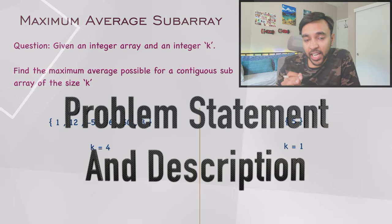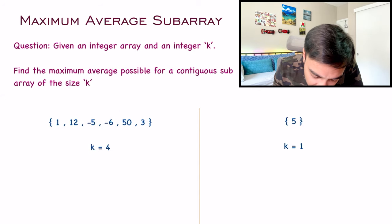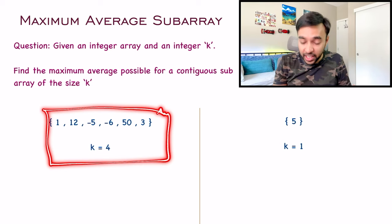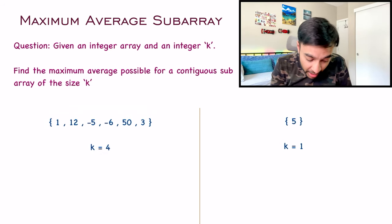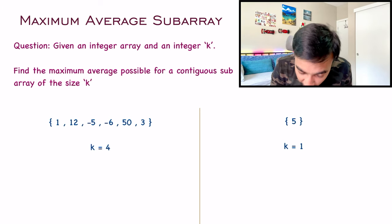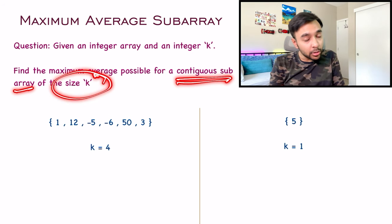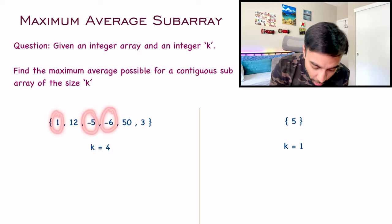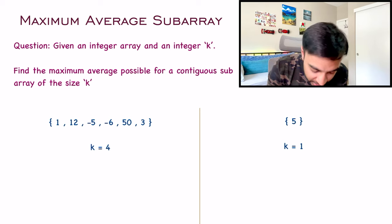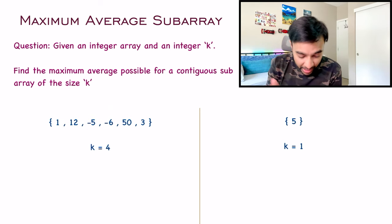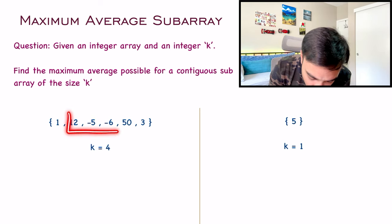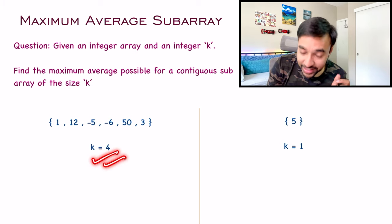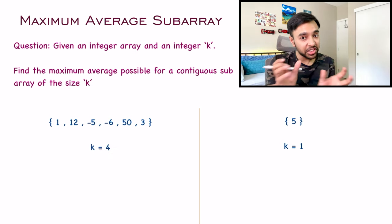Let's make sure we understand this problem statement correctly. In this problem, you are given an integer array and one more integer that is k. You have to find the maximum average possible for a contiguous subarray that has the size k. A contiguous subarray simply means that all of the elements should be together — you cannot choose non-adjacent elements. In this problem, you are given a size of 4, which means you have to choose contiguous subarrays of size 4.